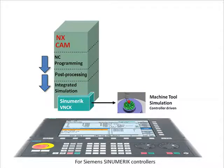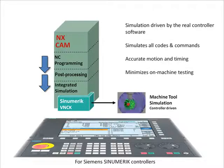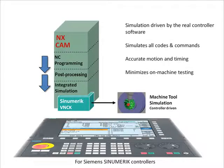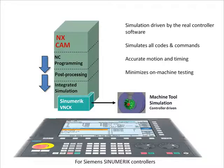Of course, we are still using the G-code output of the NX post processor for that machine tool. This option for Siemens-controlled machines is available as an add-on to NX CAM. It is called the VNCK option, referring to the name of the controller core software: the Virtual Numerical Control Kernel.